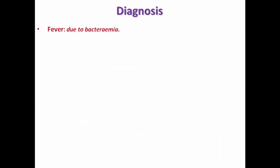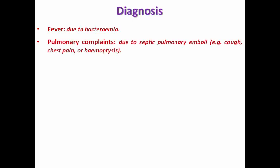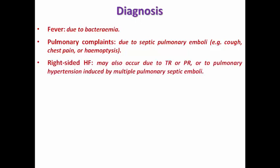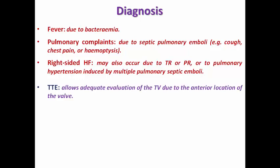How do we diagnose right-sided infective endocarditis? Patients mostly present with fever due to bacteremia, plus or minus pulmonary complaints due to septic pulmonary emboli — which is the first organ receiving emboli from tricuspid valve vegetation — causing dry or productive cough, pleuritic chest pain, or hemoptysis. Some patients may develop right-sided heart failure due to tricuspid or pulmonary valve regurgitation, or pulmonary hypertension induced by multiple septic pulmonary emboli, presenting with abdominal swelling from a congested liver and bilateral lower limb edema.